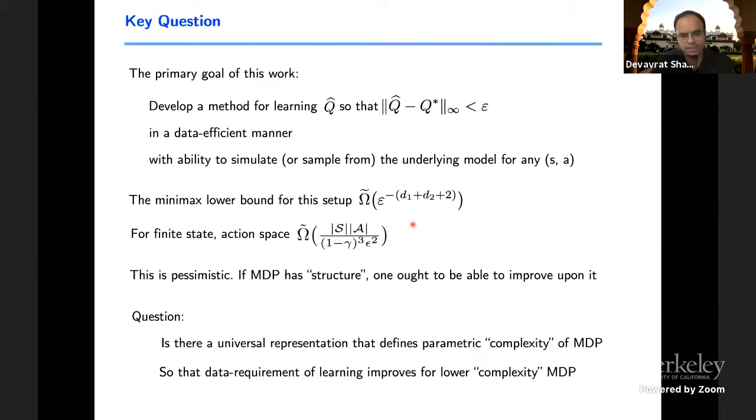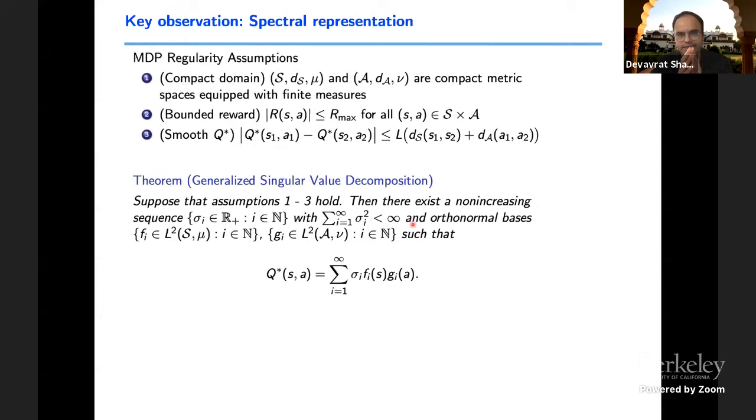To paraphrase this, one way to ask question is: are there representations for MDPs that allow us to define some notion of parametric complexity, and as that parameter changes, complexity of MDP changes, which translates effectively into more or less data requirement? With this as a motivation, in this work we try to pursue one such representation, what we'll call the traditional spectral representation.